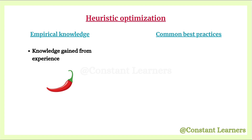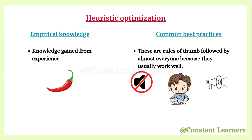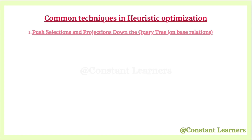In the case of common best practices, these are rules of thumb followed by almost everyone because they usually work so well. For example, everyone knows it's best to study in a quiet place instead of a noisy one for better focus. In DBMS, a best practice is to perform a projection early to remove unwanted columns, reducing the size of the data to process.